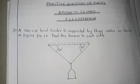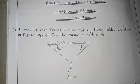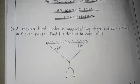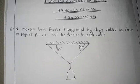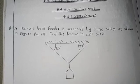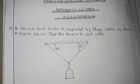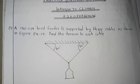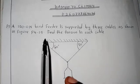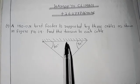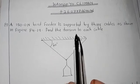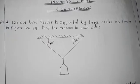We have these interesting practice questions on forces, using Newton's laws in order to find the solutions. They are very simple questions, but a little bit tricky. So make sure you follow me well, even as I will be solving. The first question says: a 150 Newton bed feeder is supported by three cables as shown in figure P4.19. Find the tension in each cable.